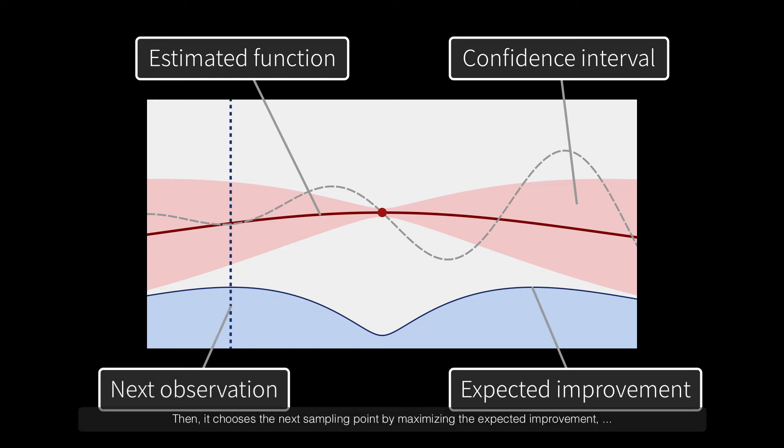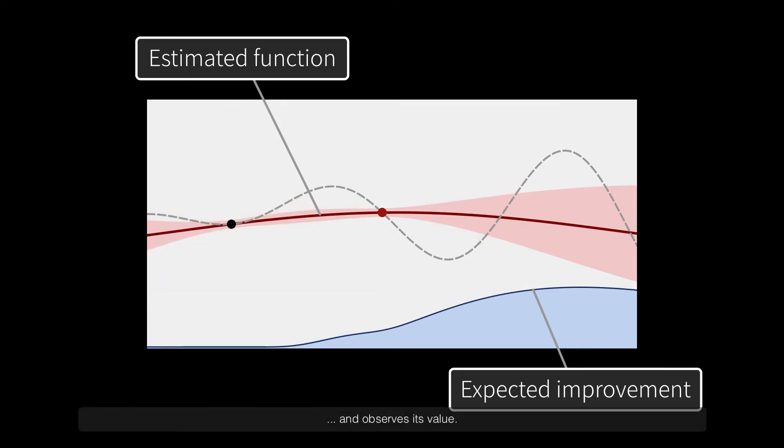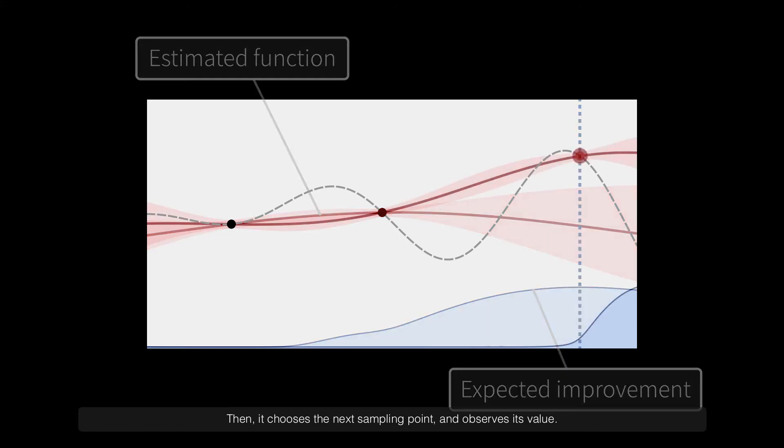Then, it chooses the next sampling point by maximizing the expected improvement and observes its value. Then, it chooses the next sampling point and observes its value.